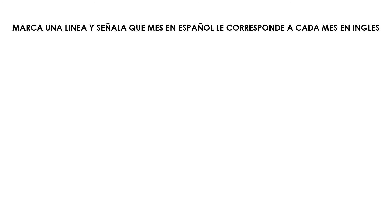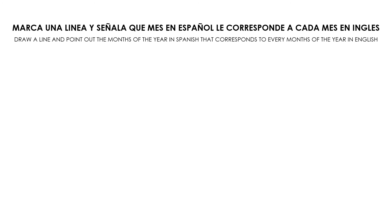Marca una línea y señala qué mes en español le corresponde a cada mes en inglés. Draw a line to the month of the year in Spanish that corresponds to every month of the year in English. Now, match the months in Spanish with the corresponding months in English.